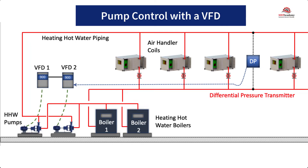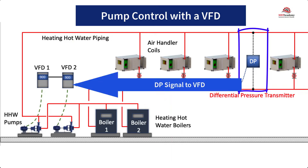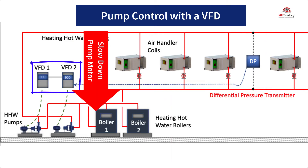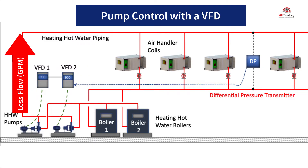The opposite happens when the heating hot water valves start to close because the space is warm enough. The valves start closing, causing an increase in pressure in the piping, which is sensed by the differential pressure transmitter. The transmitter then sends a signal to the variable frequency drive to slow down the pump motor, reducing the flow, the GPM.